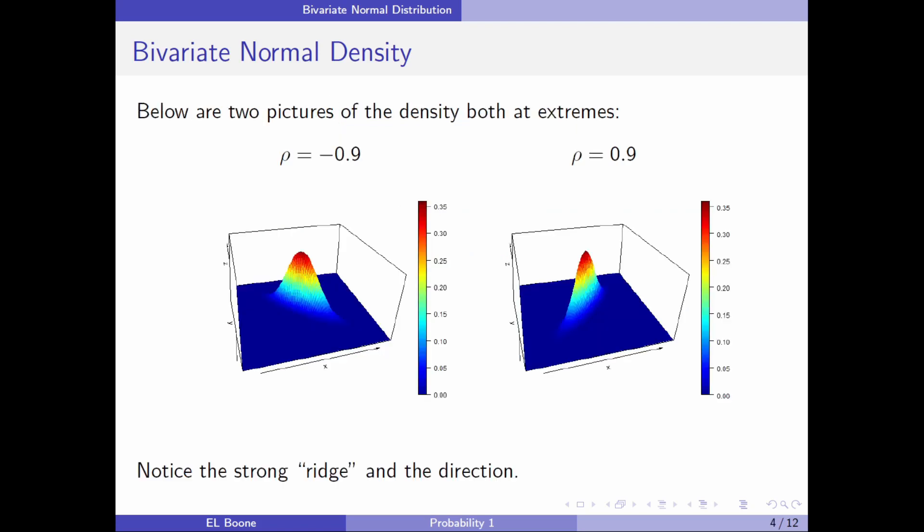If I looked at some pictures of this, I can see that here I've got ρ equal to negative 0.9 and ρ equal to 0.9. When it's positive, lower values are associated with lower ones, and it has a positive slope. Same thing with the negative one—it has a negative slope. You can see there's a ridge formed here.